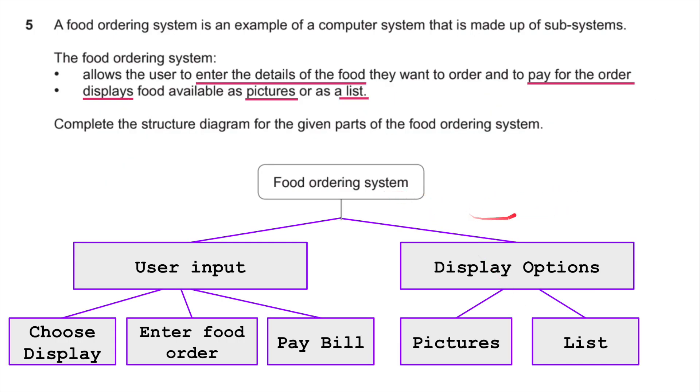We've got a drop-down design, a subsystem. Here we go, and this is for a food ordering system. The food ordering system allows the user to enter the details of the food they want to order and to pay for the order. It also displays foods available as pictures or as a list. Complete the structure diagram for the given parts of the food ordering system. Obviously, a food ordering system broken down into two parts, the inputs and the outputs. The user input and the display options. So the user chooses a display, do they want pictures or lists? And there we go, the display option would be pictures or lists. But it also allows them to enter the food they want to order, and it also allows them to pay for their order. That might be the one that throws you choosing the display, but that would be it. That would give you full marks.